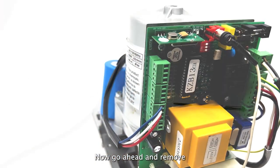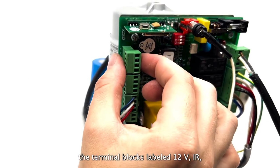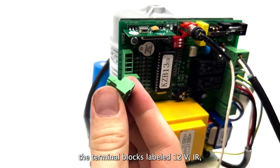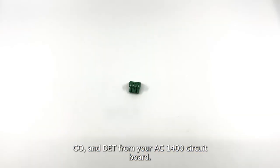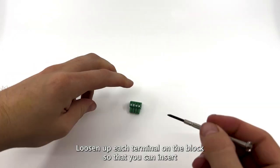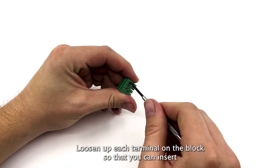Now remove the terminal blocks labeled 12V, IR, CO, and DET from your AC1400 circuit board. Loosen up each terminal on the block so that you can insert the wires.